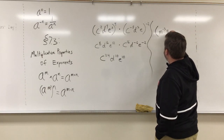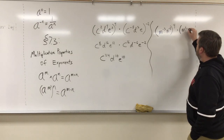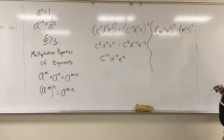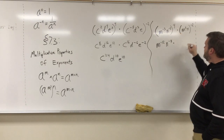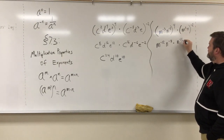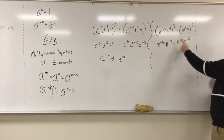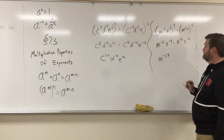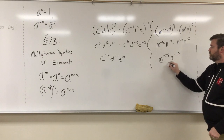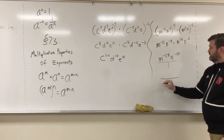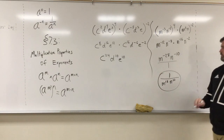Let's do (m to the negative third, n to the negative second) all that to the fourth, times (m to the 8th, n) all that to the negative second. Four times negative three gives negative 12; four times negative two gives negative eight. Negative two times eight gives negative 16; negative two times the implicit one gives negative two. Keep the base and add: negative 12 plus negative 16 is negative 28; negative eight plus negative two is negative ten. Both are negative, so send them downstairs — that gives us one over m to the 28th, n to the 10th. That's our final simplified answer.